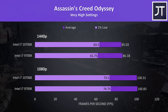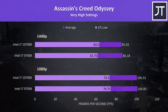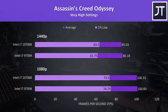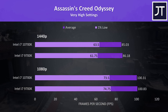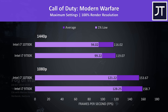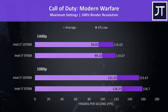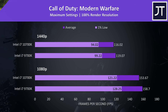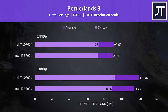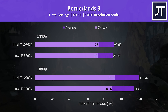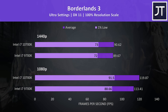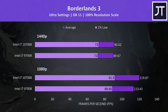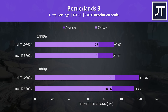Assassin's Creed Odyssey was tested with the game's benchmark tool, and there's much less of a difference here — basically margin of error results in most instances at either resolution. Call of Duty Modern Warfare was tested in campaign mode, and the differences were a little strange here, with the 10700K coming out behind in all instances, so I'm guessing this game may not particularly benefit from the additional threads. Borderlands 3 was tested using the game's built-in benchmark — at 1080p the 10th gen chip was almost 6% faster, and when we step up to 1440p the difference was only about 1 FPS.